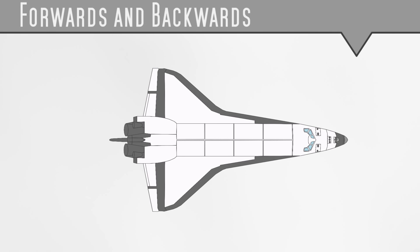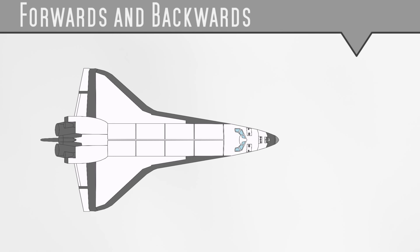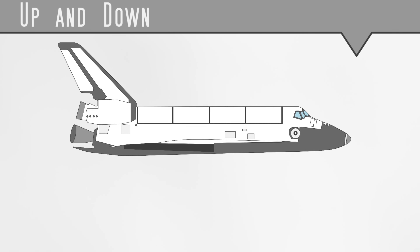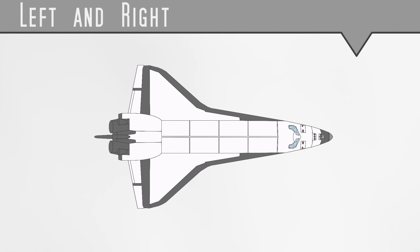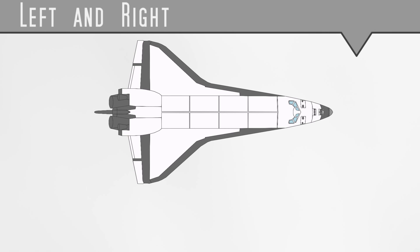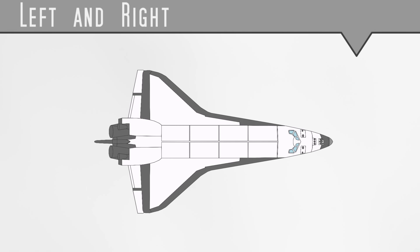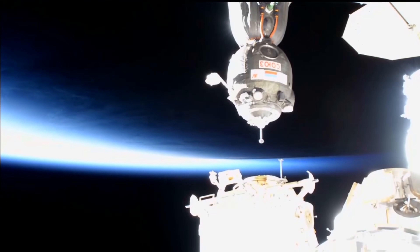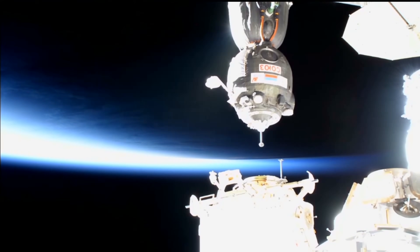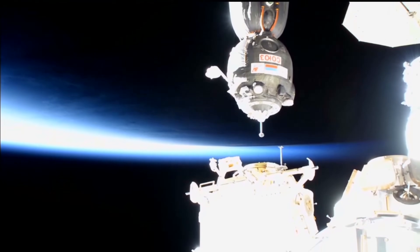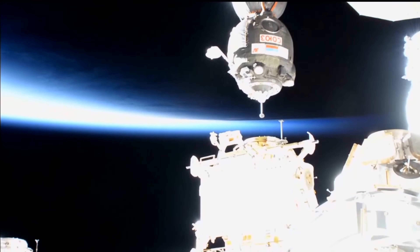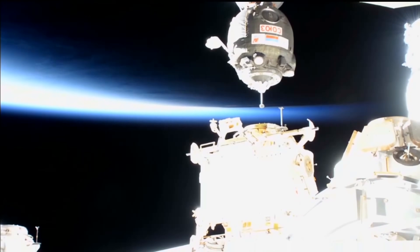Translation control is moving forwards and backwards, up and down, and side to side. This is exceptionally useful in docking manoeuvres, where you need to be able to make precise changes in velocity and slowly approach another object.